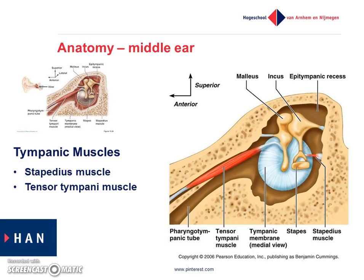When the tensor tympani muscle contracts and pulls the malleus to the front and to the inside of the middle ear, it reduces the range of movement of the tympanic membrane. You can imagine that when the manubrium is pulled forward and inward, it stiffens the tympanic membrane, and therefore reduces how much the tympanic membrane can move.